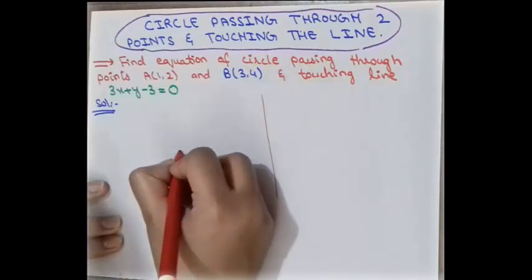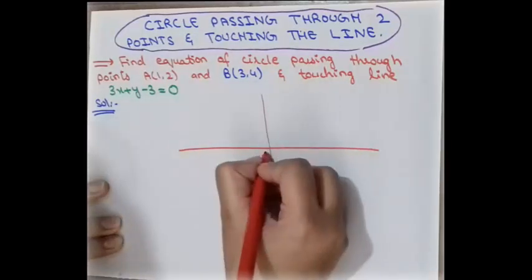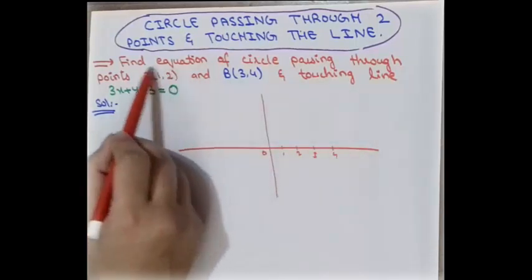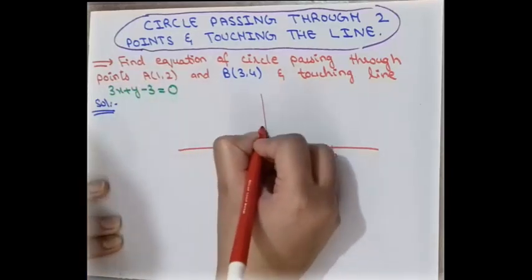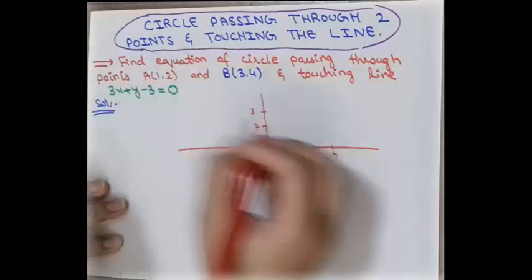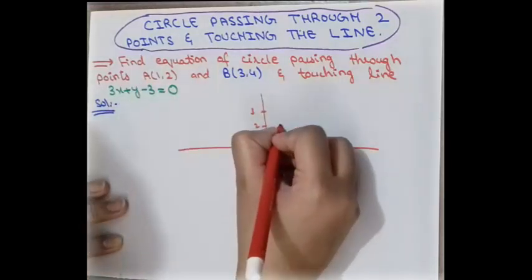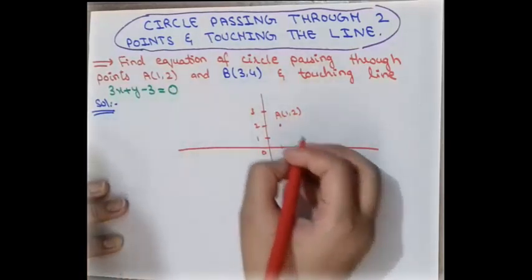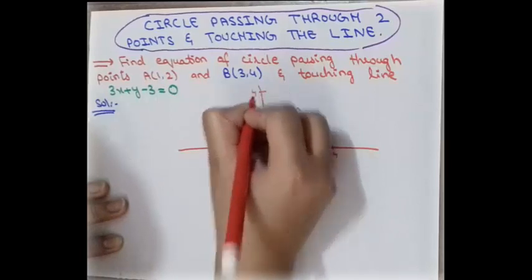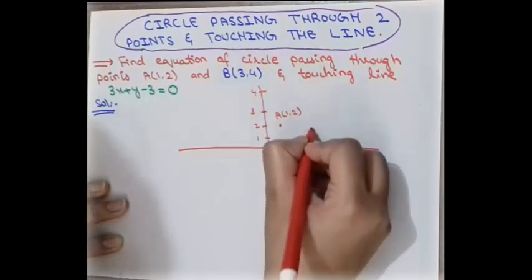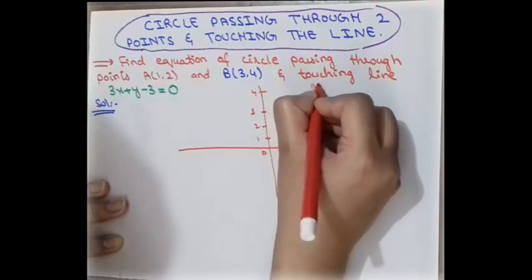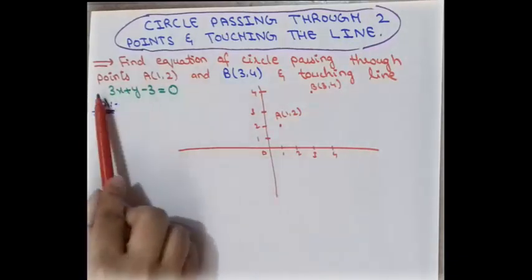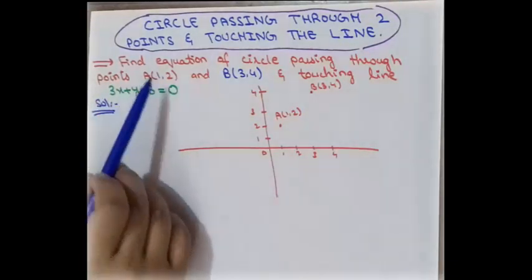First of all we plot this on a graph. This is the x-axis, this is the origin, and this is the positive side. The first point is (1, 2) — this is the y-axis — so here is point A which is (1, 2). The other point is (3, 4), so here is point B at (3, 4).